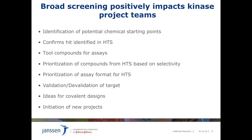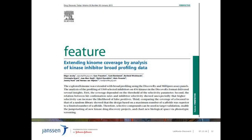This slide shows how the Janssen kinase inhibitor profiling project positively impacted discovery project teams over the last two years. The impact has been seen in the identification of potential chemical starting points, the confirmation of HTS hits, delivery of tool compounds for assays, prioritization of compounds for HTS based on selectivity, prioritization of assay formats for HTS, the validation and devalidation of targets, the generation of ideas for covalent design, and the initiation of new projects. This work has been summarized in a Drug Discovery Today feature article.